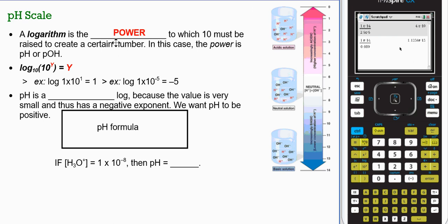The logarithm value is the power to which 10 must be raised to get a certain number. In this case, the power is pH or pOH. So log of base 10 of 10 to the power of y gives you the value y.